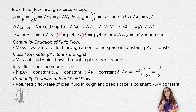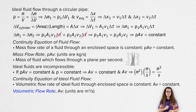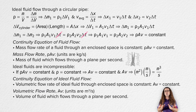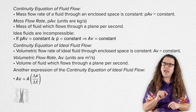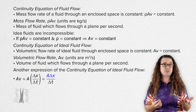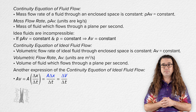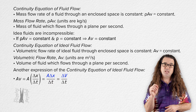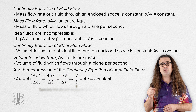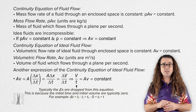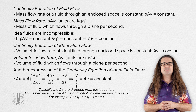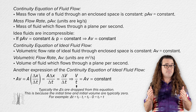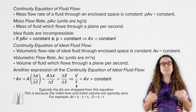Volumetric flow rate is an important term — it is the volume of the fluid which flows through a plane per second, and it equals the cross-sectional area of the plane times the velocity of the fluid flowing through the plane. Because average velocity equals displacement over change in time and cross-sectional area times displacement equals volume, volumetric flow rate also equals delta V divided by delta t, and remains constant for an ideal fluid through an enclosed space.